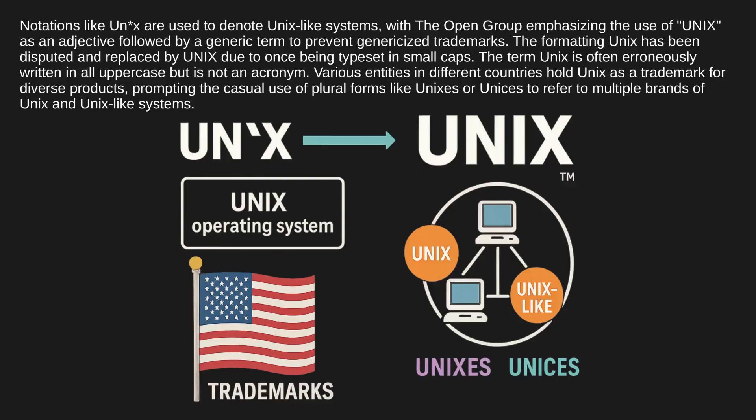Notations like 'Unix' are used to denote Unix-like systems, with the Open Group emphasizing the use of 'Unix' as an adjective followed by a generic term to prevent genericized trademarks. The formatting 'UNIX' has been disputed and replaced by 'Unix,' due to once being typeset in small caps. The term is often erroneously written in all uppercase but is not an acronym. Various entities in different countries hold Unix as a trademark, prompting the casual use of plural forms like 'Unixes' or 'Unices' to refer to multiple brands of Unix and Unix-like systems.